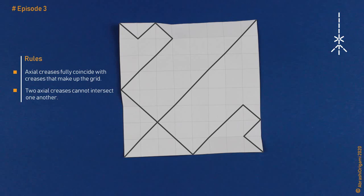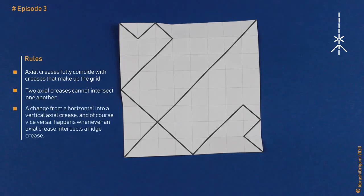Crease patterns with advanced elements, such as Pythagorean stretch, require a little bit more complex rules. So, for the time being the rule is as follows. A change from a horizontal into a vertical axial crease, and of course vice versa, happens whenever an axial crease intersects a ridge crease. In other words, on one side of a ridge crease, axial creases are always horizontal, and on the other side they are always vertical. There cannot be both types of axial creases on the same side of a ridge crease. Think about it. A direct consequence of this rule is that on the crease pattern, there are distinct areas of only horizontal or only vertical axial lines. The lines that unambiguously mark the transition from one area to another are of course the ridge creases.